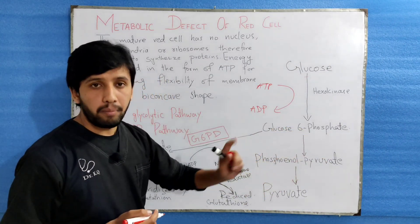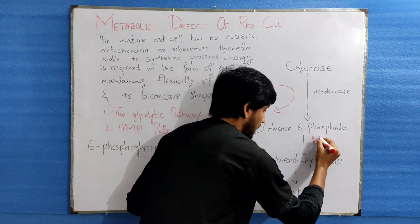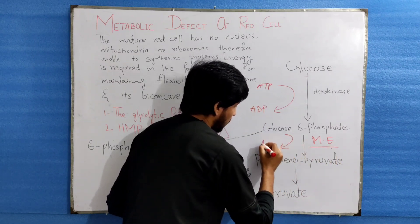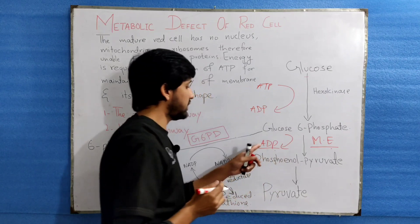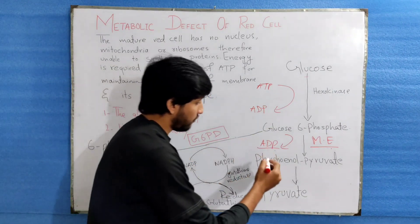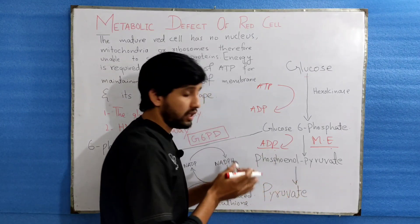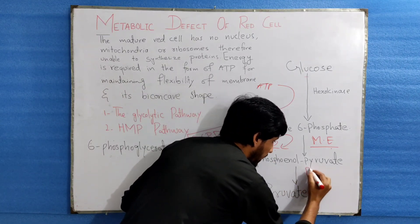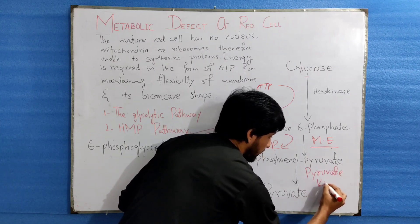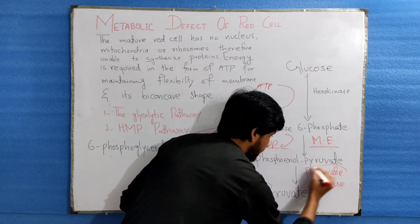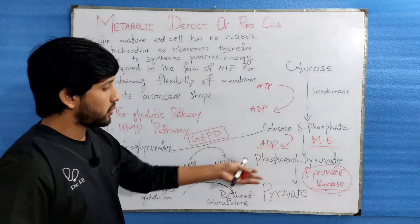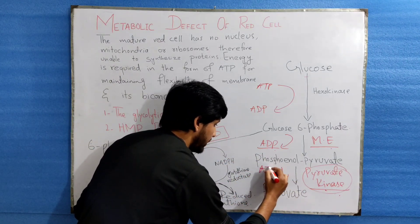The second step is glucose-6-phosphate being converted into PEP — phosphoenolpyruvate — with ADP generation also occurring in this step. The third step is phosphoenolpyruvate being converted into pyruvate through the enzyme pyruvate kinase. This is a very important enzyme in this reaction.